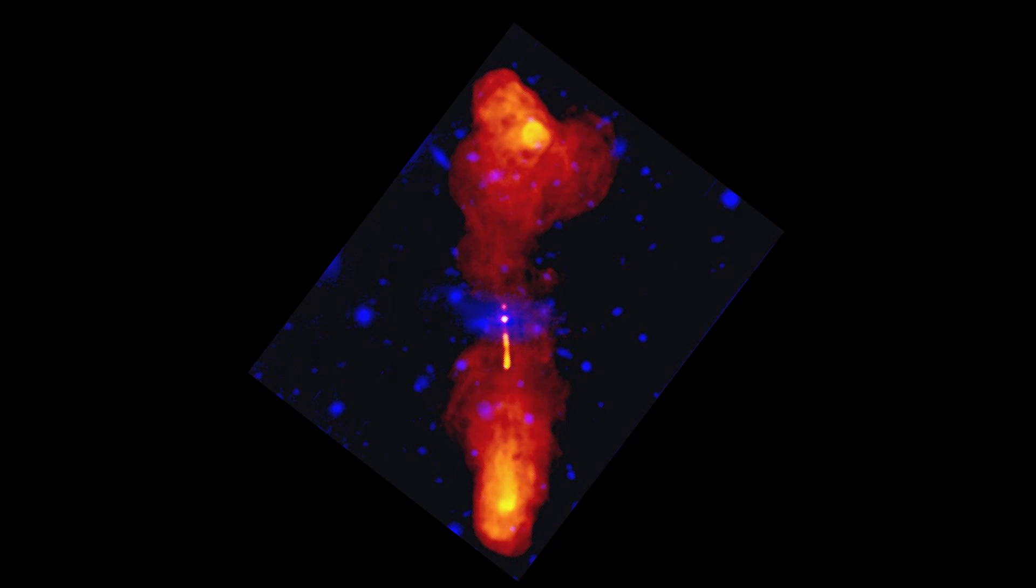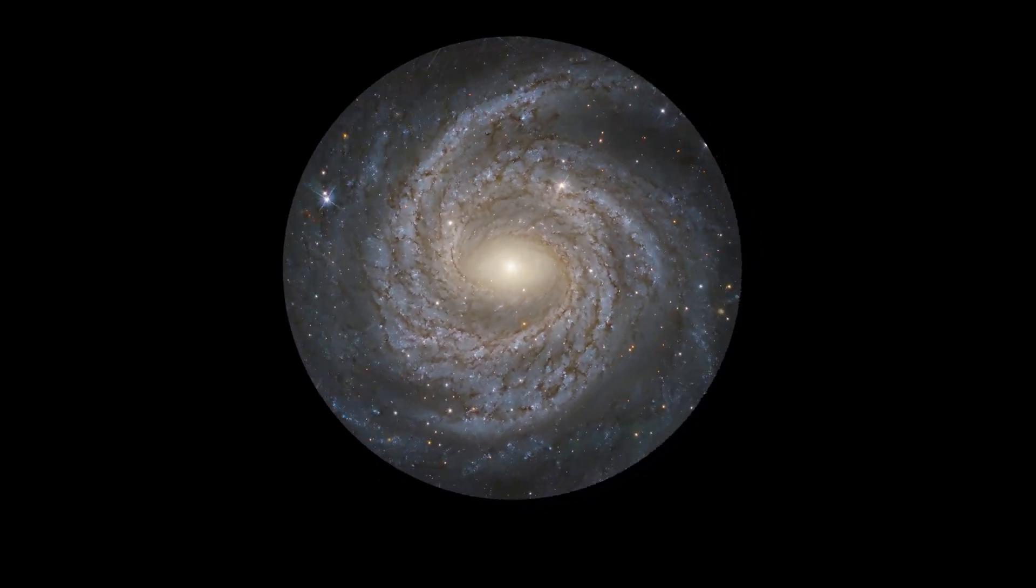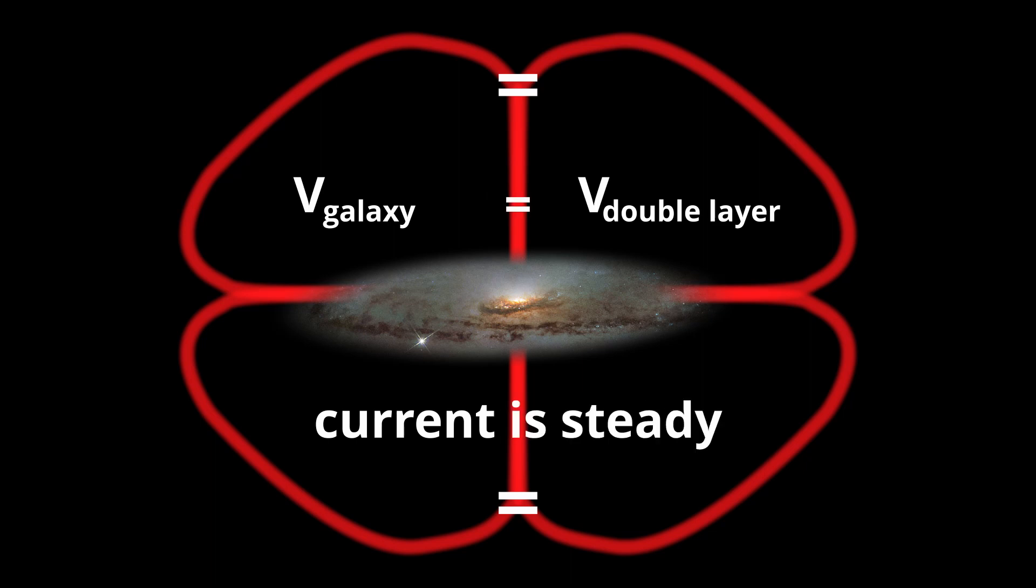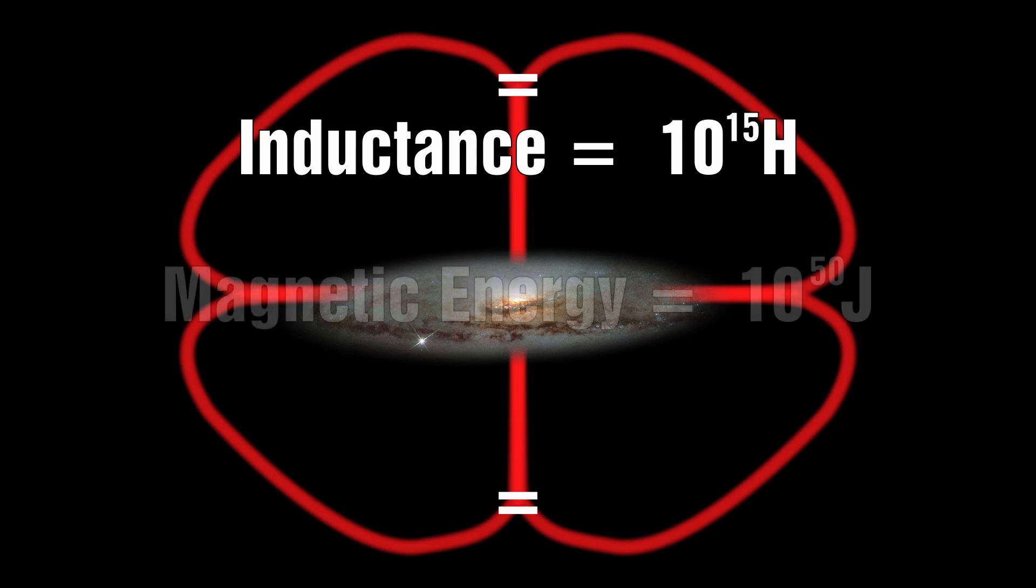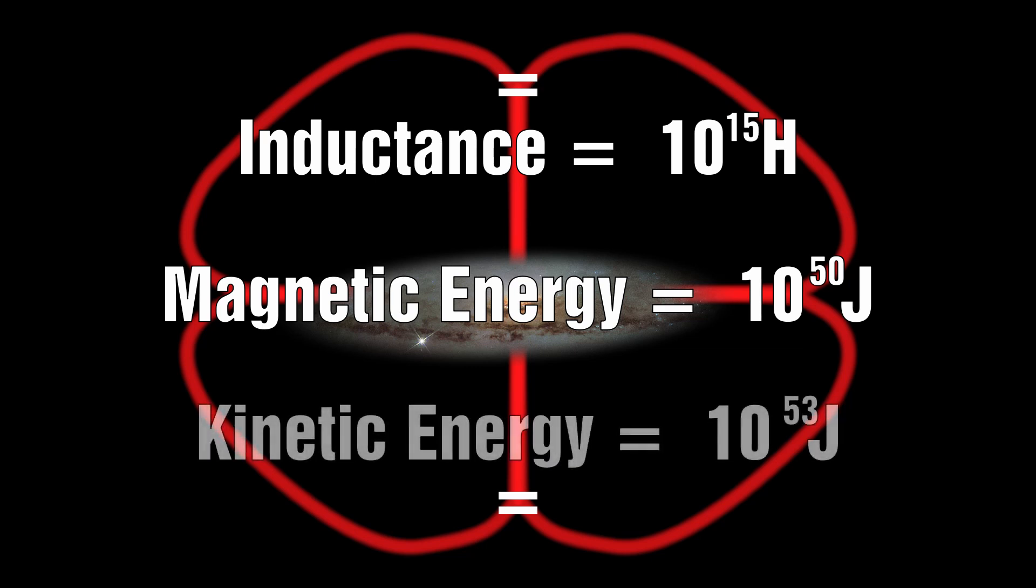Alvin goes on to discuss that the energy for this circuit could be supplied simply by the rotational energy of the galaxy. He shows that as long as the voltage of the galaxy is greater than the voltage of the double layer, the current will continue to grow. And once they are equal, the current is constant. He calculates that the inductance of our galaxy could be as large as 10 to the 15 Henrys, and the magnetic energy as much as 10 to the 50 Joules. He calculates that the kinetic energy of the galaxy rotation is about 10 to the 53 Joules, showing that the magnetic energy is only a small fraction of the total energy.